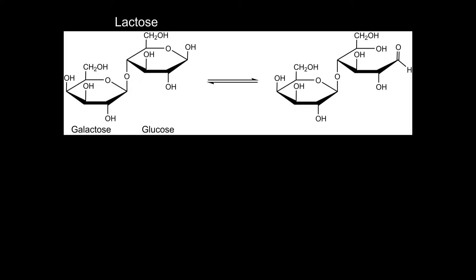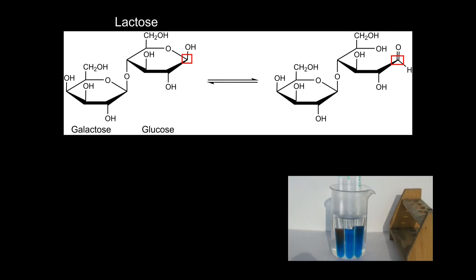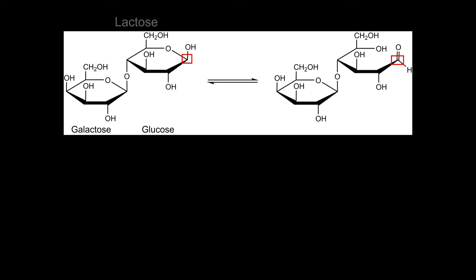Like the monosaccharides, the disaccharides are present in the closed chain form when they are not dissolved. When dissolved in water, one of the rings is able to open if one of the anomeric carbon atoms is free. Due to this, lactose, which is shown, is a reducing sugar and causes the results of common tests for reducing sugars to be positive.